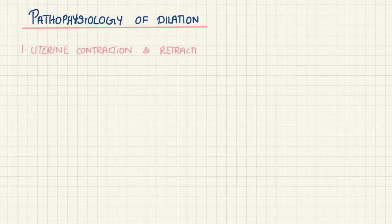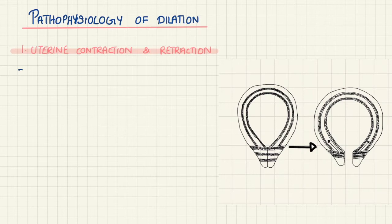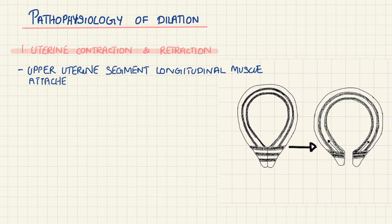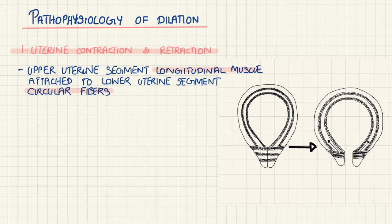The pathophysiology of dilation can be split into uterine contractions and retractions. The longitudinal muscle fibers of the upper segment are attached to circular muscle fibers of the lower segment and the upper part of the cervix.